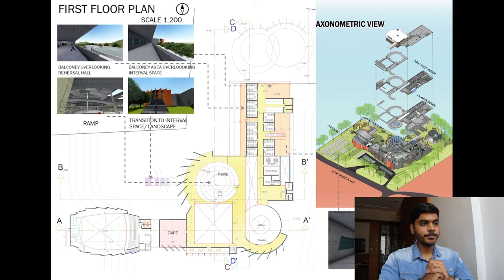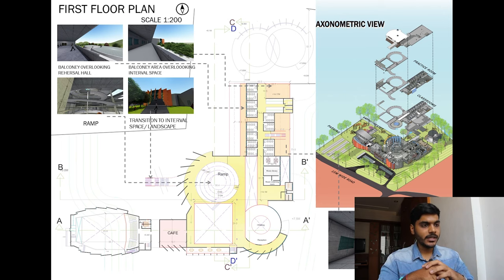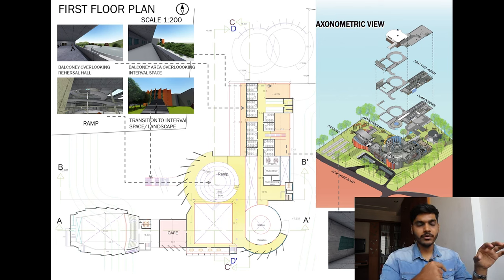Next is the first floor plan — basically rehearsal halls. Each class has around eight to ten pianos, and the teacher has a grand piano. Each student with a piano also needs plugs in the ground, which needs to be taken care of. There are east-facing balconies for students, and a transition space from the ramp down to the ground floor.